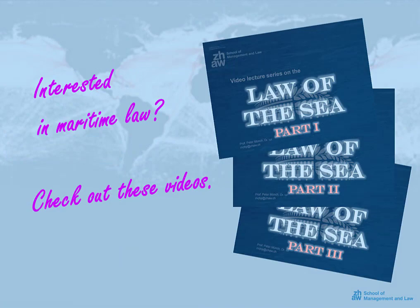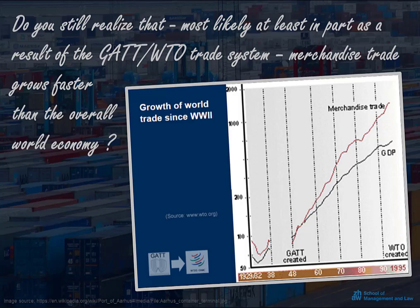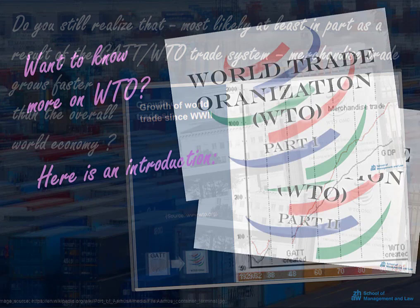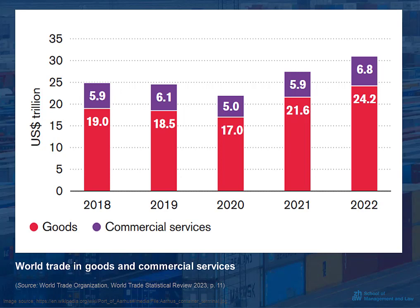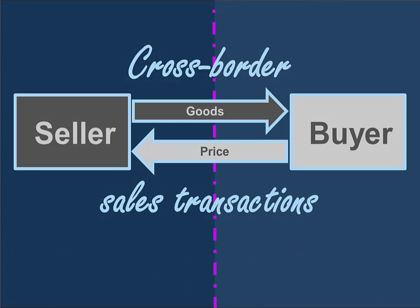Global merchandise trade has consistently grown faster than the overall world economy, reflecting the success of the GATT and the WTO trade system. On this chart, you can see that even though we are supposed to move towards a modern service economy, merchandise trade is still far more important today than trade in commercial services — worldwide merchandise trade still represents several times the volume of trade in services. In terms of private law, global trade consists of countless cross-border sales transactions. Contracts for the international sale of goods are the core private law instrument in global merchandise trade.